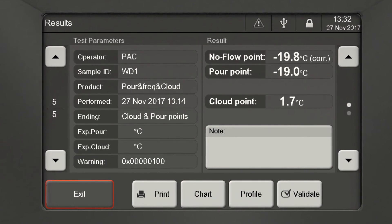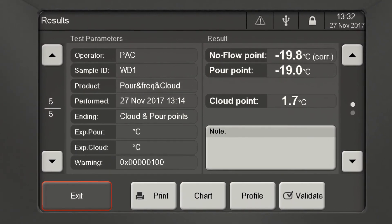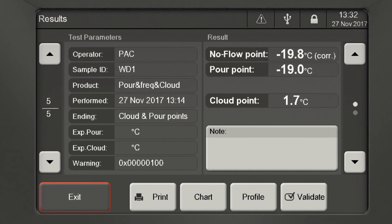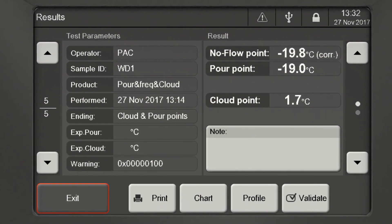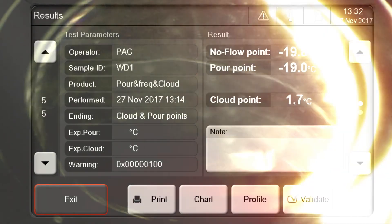When both the cloud and pour point program is selected, the results will show the cloud point temperature, the no flow point temperature, and it converts the no flow result to a pour point temperature.